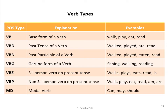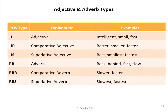VBZ and VBP distinguish between third-person and non-third-person. VBZ is used for third-person verbs in present tense (e.g., walks, plays, eats). VBP is for non-third-person (e.g., walk, play, eat, read, am, are). MD is the modal verb — words like can, may, should, and might come under the modal verb category.